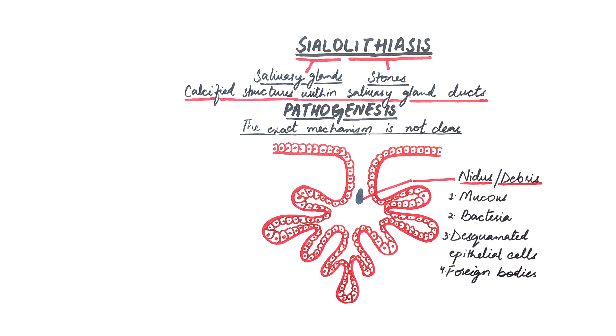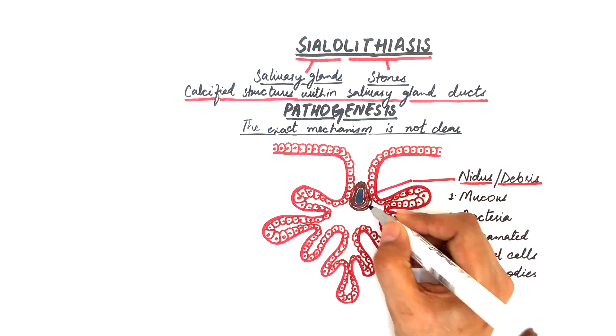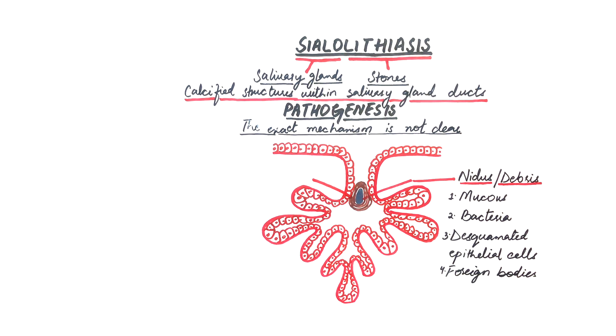The nidus provides a really good environment for the deposition or attachment of salivary minerals, which are mostly calcium salts. These salts are laid down in laminations, resulting in the formation of a stone or sialolith.